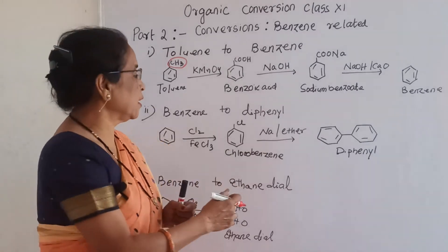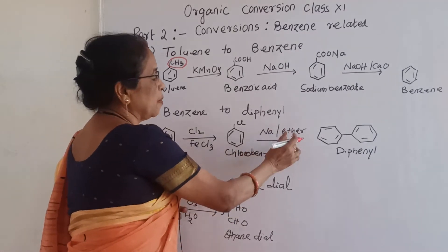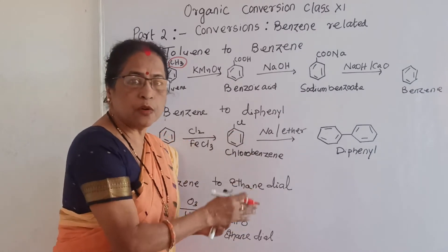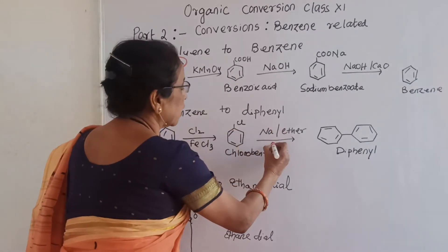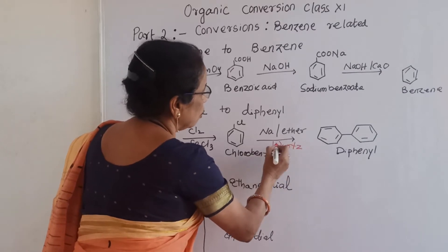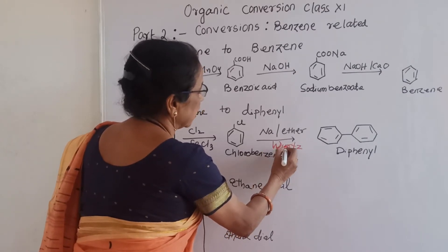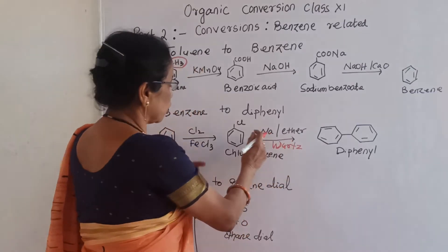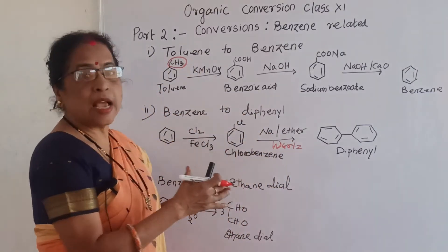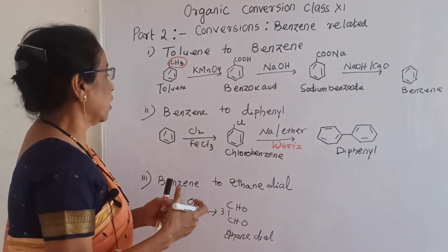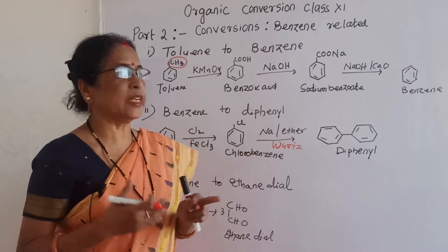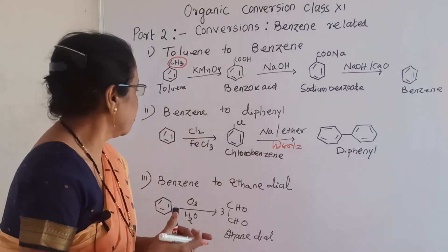Now chlorobenzene when treated with sodium and ether — that is called the Wurtz reaction. In the Wurtz reaction, two phenyl groups, two benzene groups, attach to each other and produce diphenyl. So chlorobenzene treated with sodium and ether gives diphenyl.